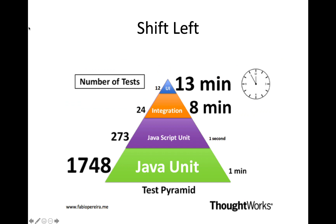Here's an example of an ideal test pyramid for a Java application that has over 1,700 unit tests, 273 acceptance and integration-level tests, 24 integration tests, and finally only 12 UI tests. This is the sort of ratio that you might think about when building out your automated testing process.